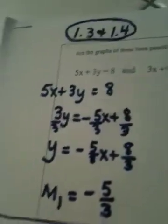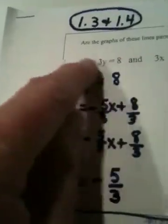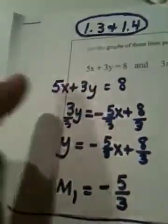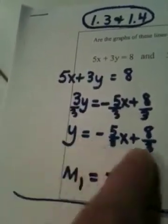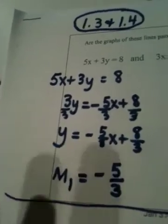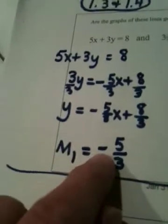So what you have to remember is this: whenever you're trying to decide if two lines are parallel or perpendicular, the equation of the line has to be in the form y equals mx plus b. So I solve this equation for y and I now know its slope is negative 5 thirds.